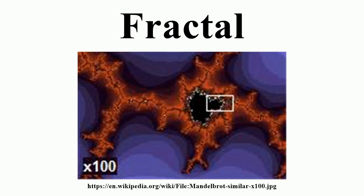Approximate fractals found in nature display self-similarity over extended, but finite, scale ranges. The connection between fractals and leaves, for instance, is currently being used to determine how much carbon is contained in trees. Phenomena known to have fractal features include river networks, fault lines, mountain ranges, craters, lightning bolts, coastlines, mountain goat horns, trees, geometrical optics, and animal coloration patterns.